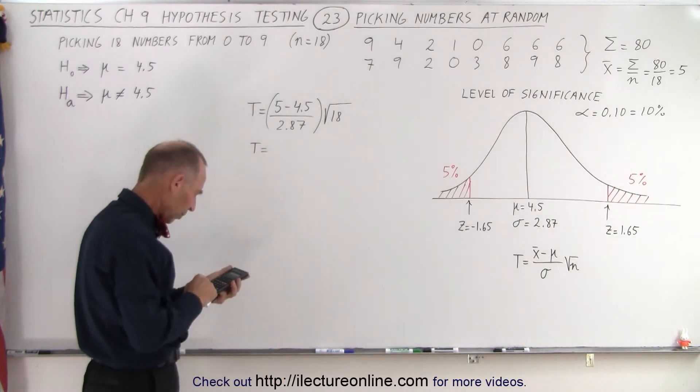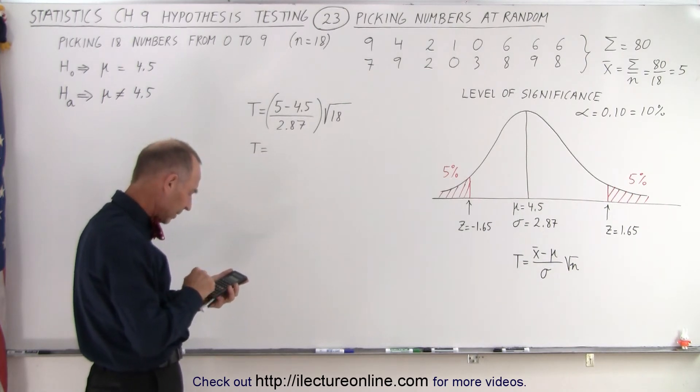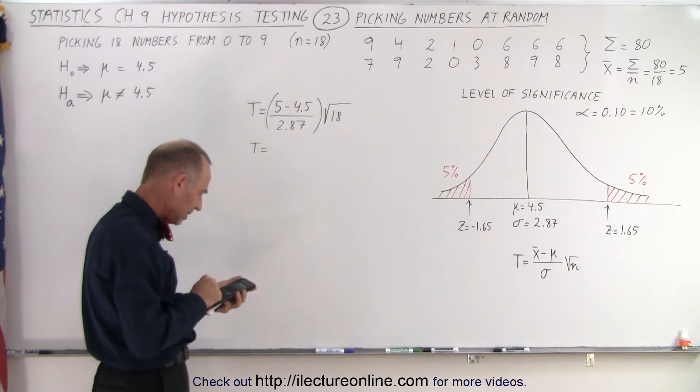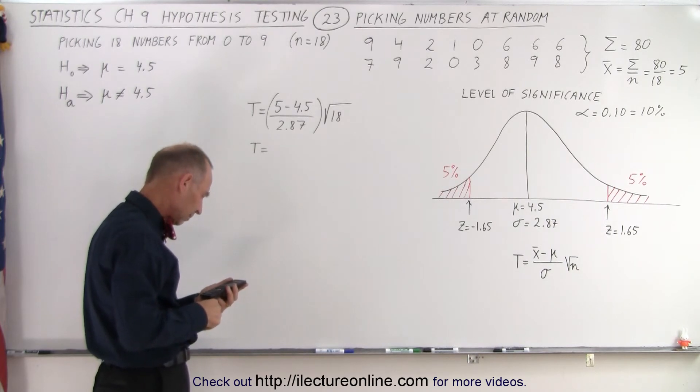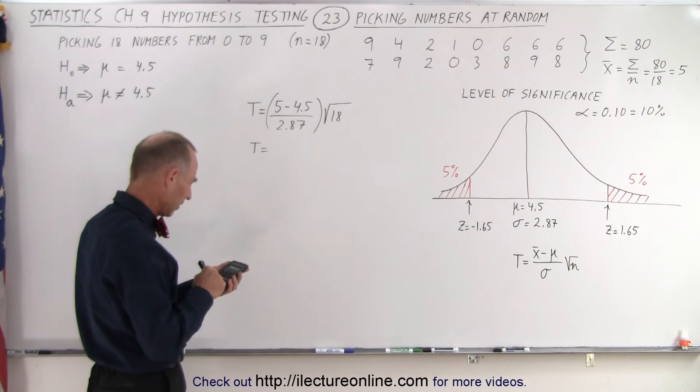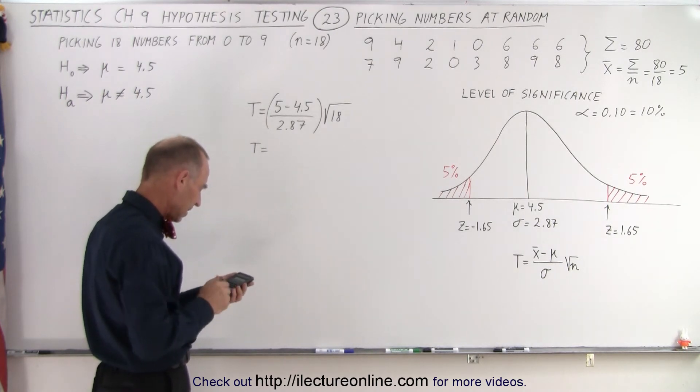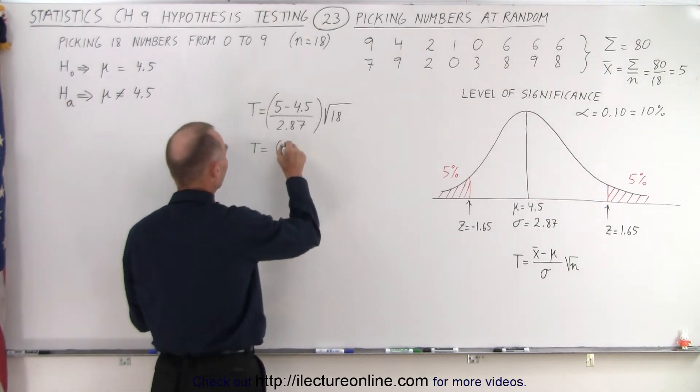So the difference is 0.5 divided by 2.87 for the standard deviation, and then multiply times the square root of 18, and we get, whoa, I better do that again because that's a terrible number here. 0.5 divided by 2.87, multiplied times the square root of 18, and that's better. We get 0.739, 0.739.